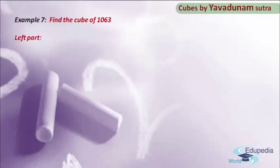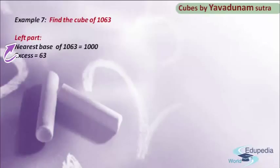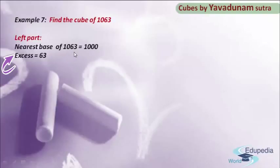In the left part, the first step is to find the nearest base of the given number 1063. The nearest base for 1063 is 1000. After finding the base, in step number 2 we have to find the excess, and it is found out by comparing the given number with the base. Here the given number is 1063 and the base is 1000, so we get an excess of 63.